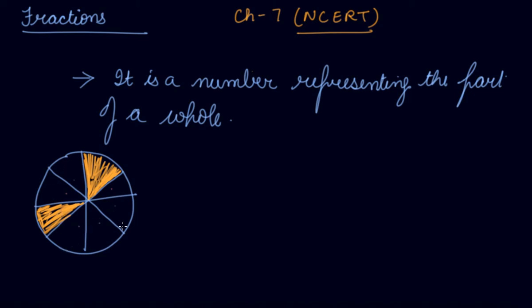The circle is divided into 8 parts, so the whole is 8. The numerator will be the two shaded parts we have taken out. So, 2 divided by 8 is the fraction in this case.